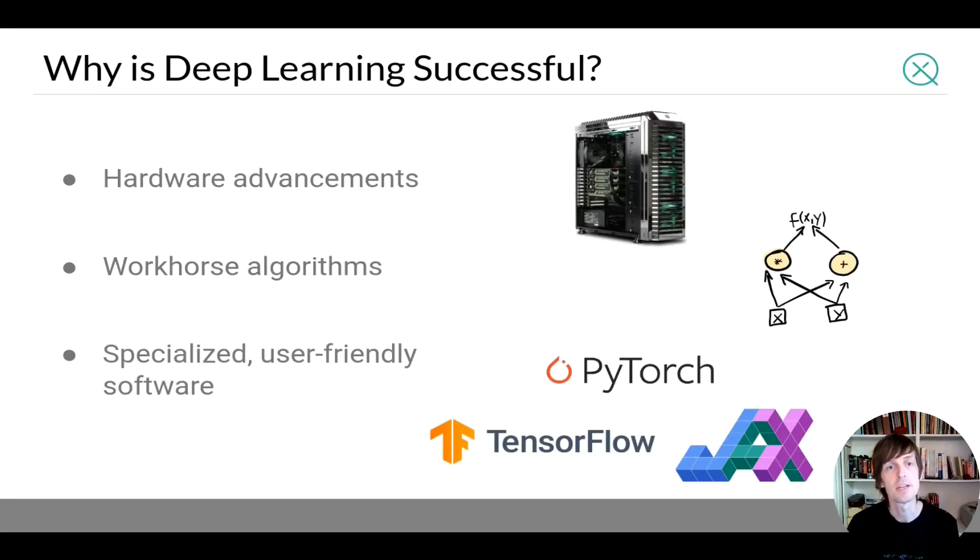Now deep learning has been tremendously successful over the past decade and I would say there's three main reasons behind that. The first is hardware advancements. Obviously GPUs have been very key and deep learning requires a lot of compute to train the most powerful models. There's also workhorse algorithms. I mentioned gradient descent and there's also the back propagation algorithm which is used to compute the gradients. And finally one thing that has really enabled the field to take off is the ability for users to rapidly experiment prototype and try out different ideas using very user-friendly software which a few of them you may have heard of.